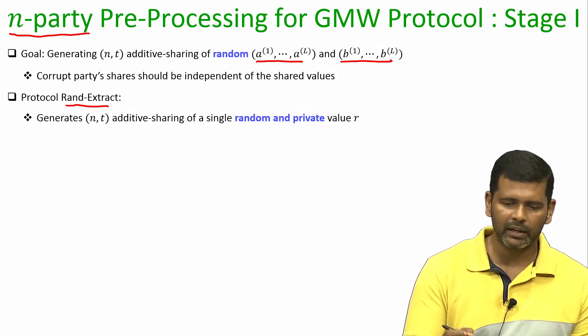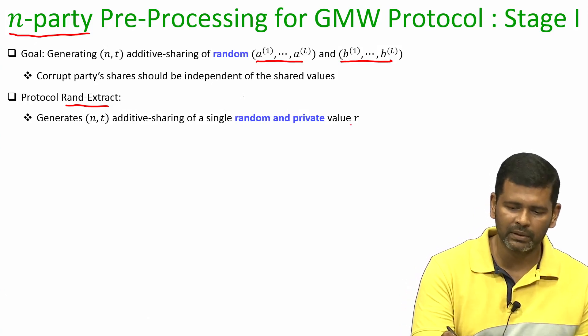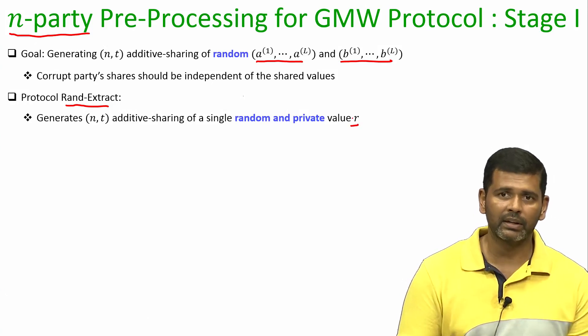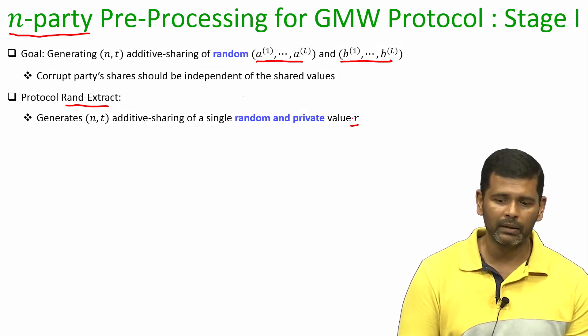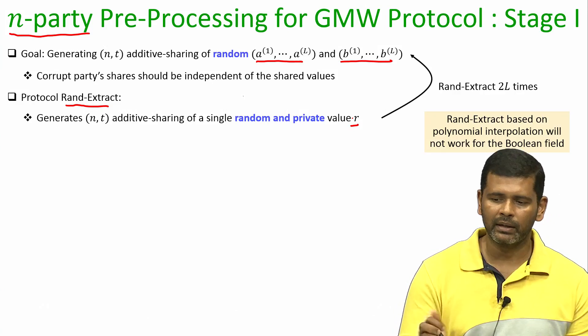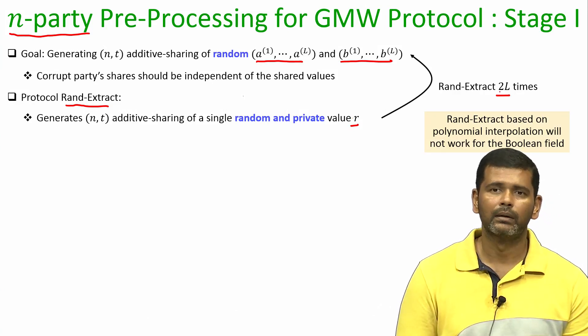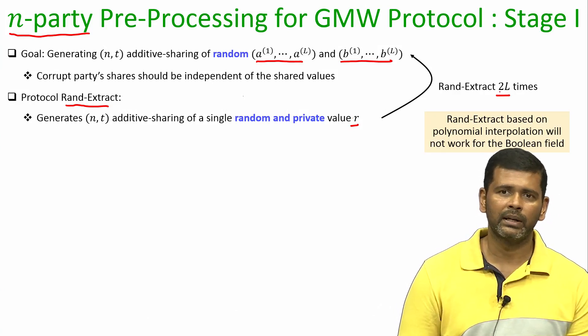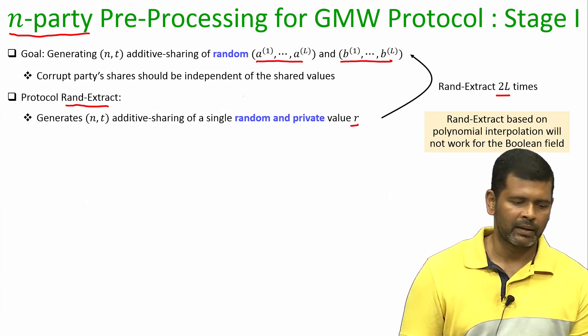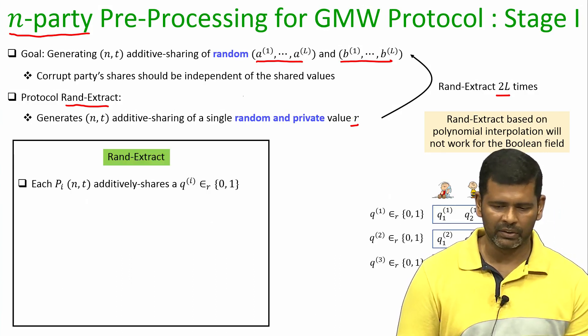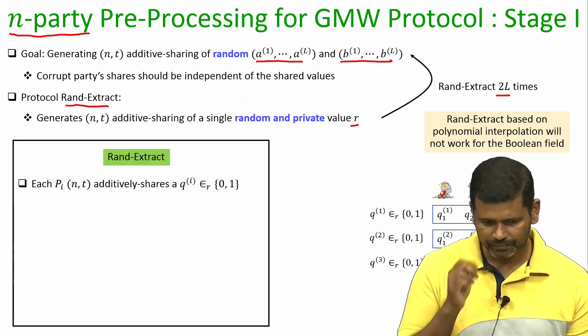The rand-extract procedure will generate a secret sharing for one random bit. We can run it L times to generate L number of random bits in a secret-shared fashion.